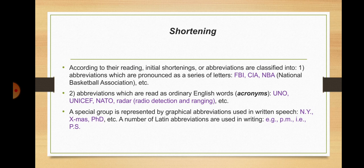According to their reading, initial shortenings or abbreviations are classified into abbreviations pronounced as a series of letters (FBI, CIA, NBA) and abbreviations read as ordinary English words, called acronyms (UNO, UNICEF, NATO, RADAR). A special group is represented by graphical abbreviations used in written speech: NY for New York, Xmas for Christmas, PhD for Doctor of Philosophy. A number of Latin abbreviations are used in writing: e.g. (exempli gratia), PM, i.e., etc., P.S. (postscriptum).